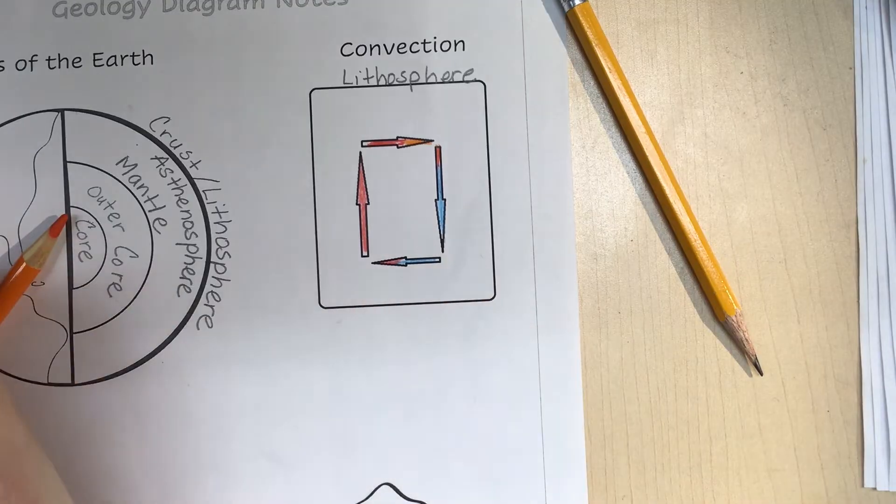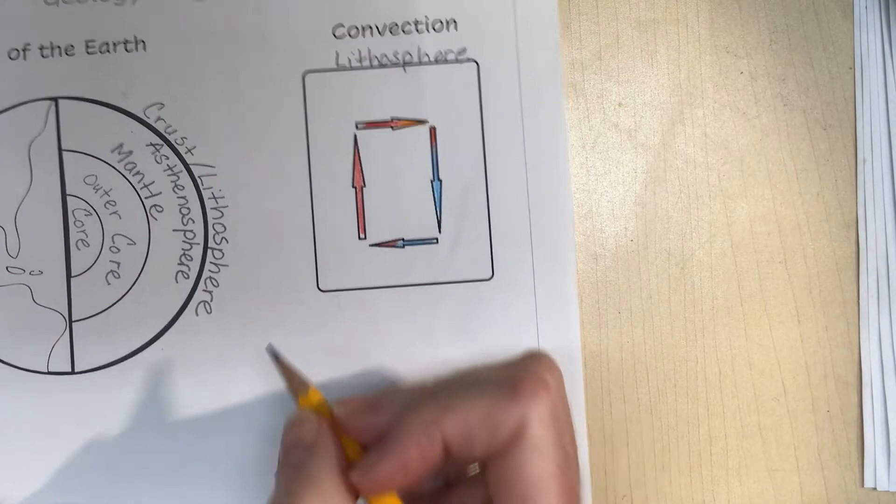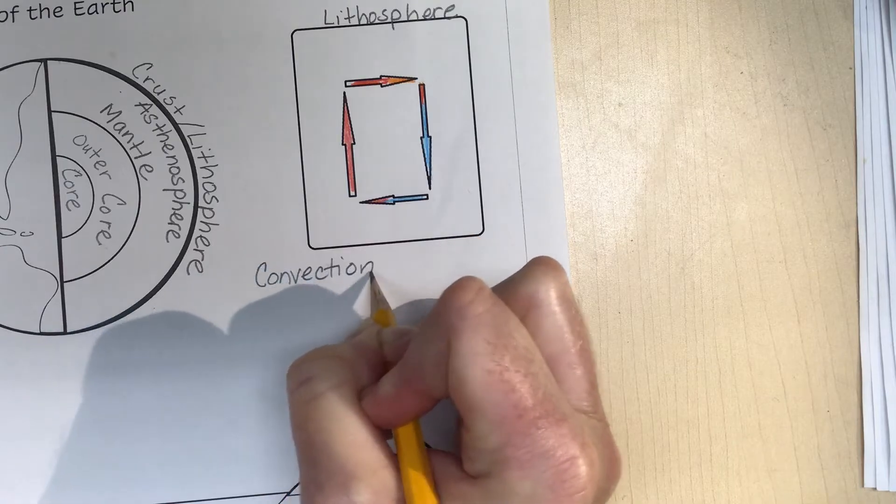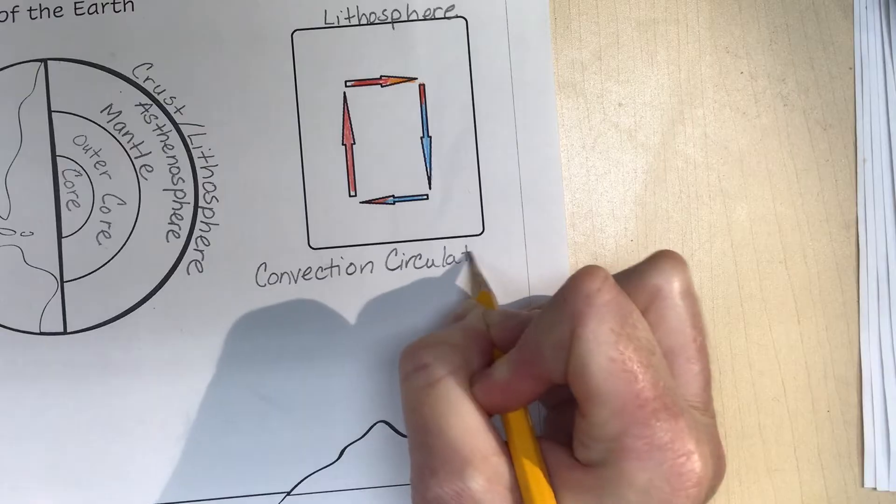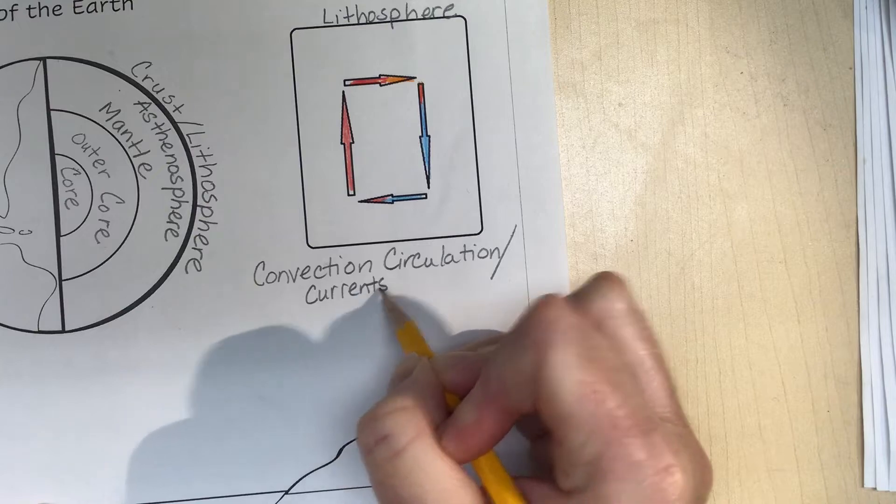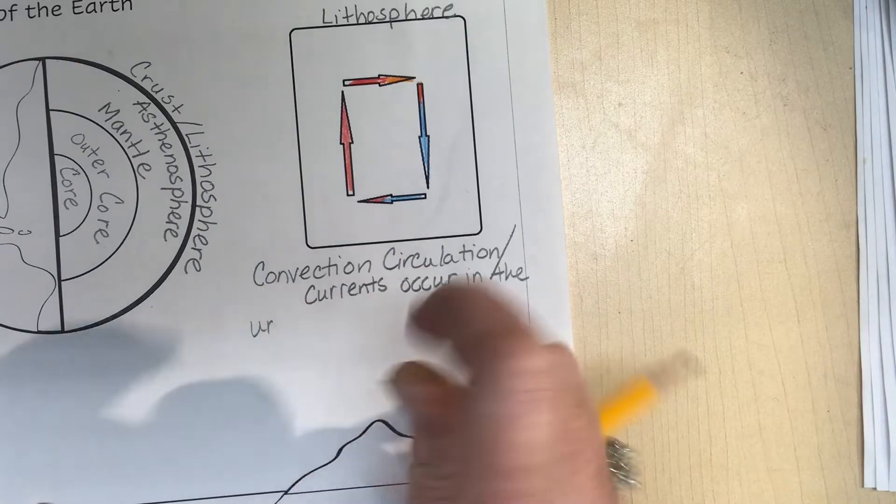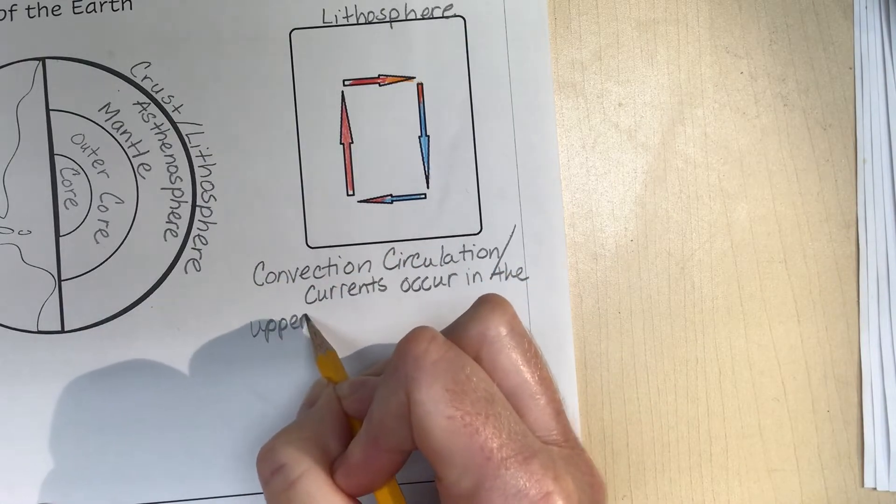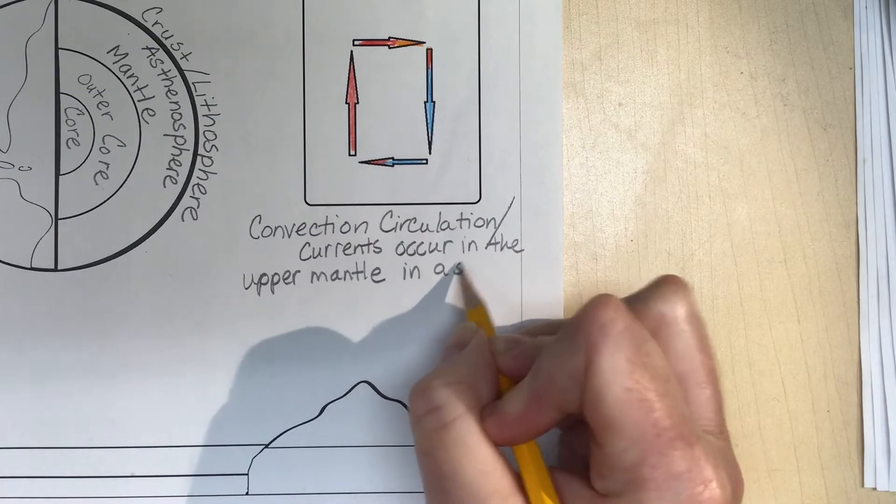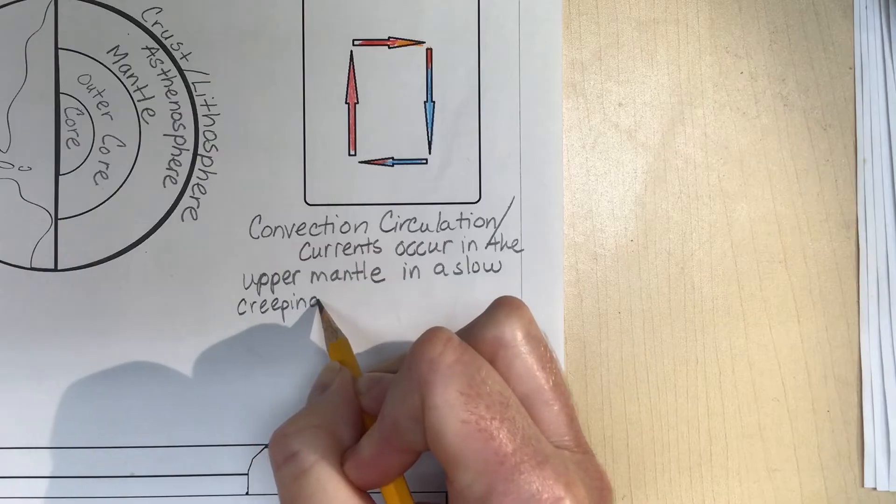Then as it gets closer to the bottom, it's going to start to warm up and it will rise. So hotter substances rise, cooler substances fall, and this is called convection. We can call this convection circulation or convection currents. In the mantle, in the upper mantle which is the asthenosphere...